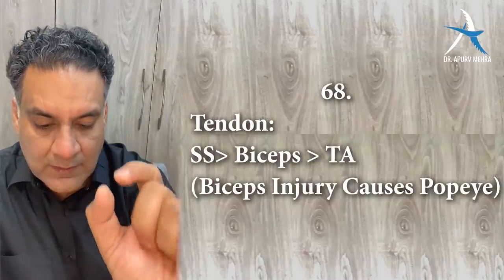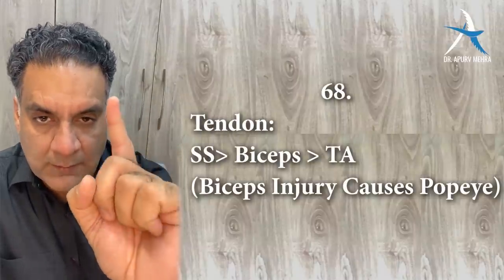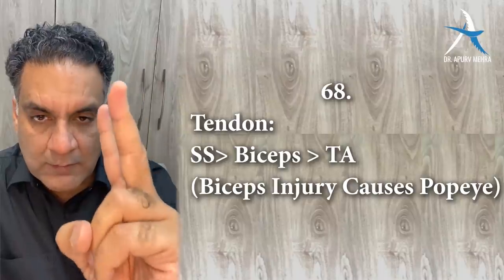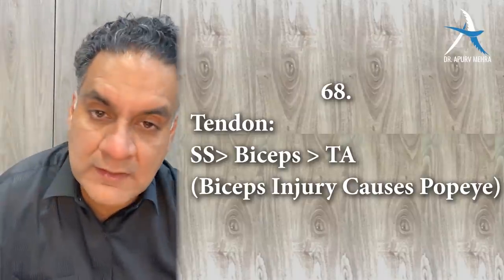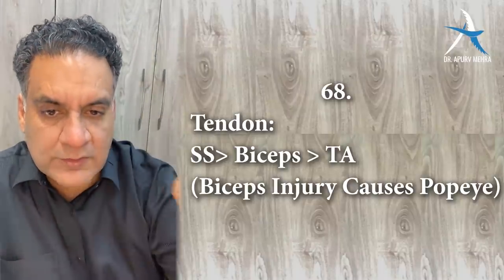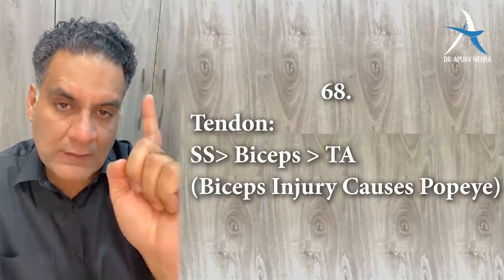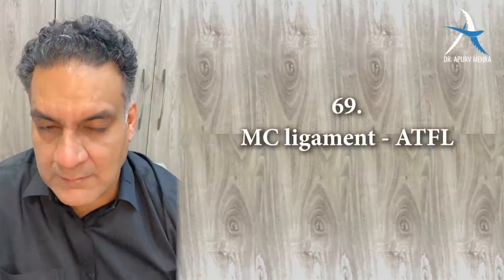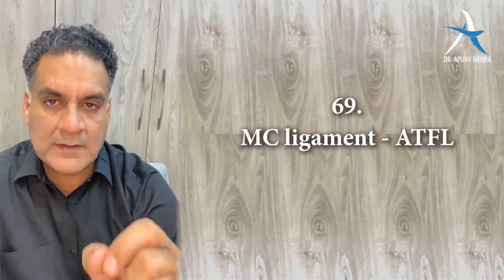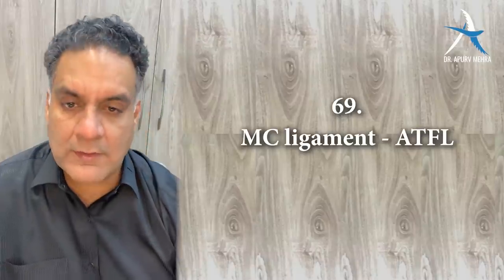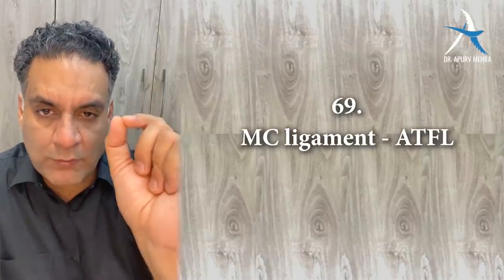Point number sixty-eight: tendon injuries — supraspinatus is the most commonly damaged tendon, followed by biceps, followed by tendo Achillis (some books list tendo Achillis first then supraspinatus). Point number sixty-nine: the most common ligament injured in the human body is the anterior talofibular ligament.